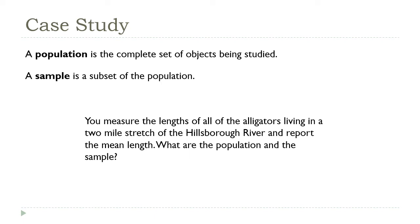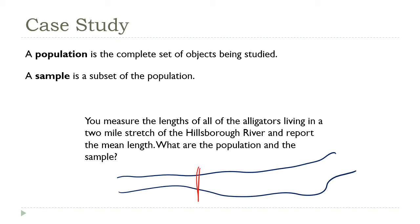In this case, it's the word 'all' in the description that makes things a little tricky. To answer this, you have to know what the researcher's goal was. If there was some issue with that particular two-mile stretch, then the alligators that were measured would be both the sample and the population, because he surveyed all of them. On the other hand, if the researcher was interested in alligators in general, then the ones measured would still be the sample, but the population could be expanded to include all of the alligators in the river as a whole.